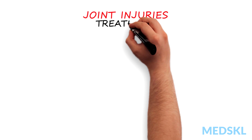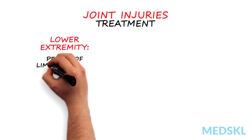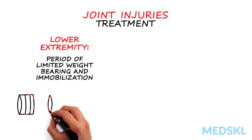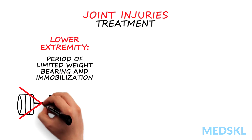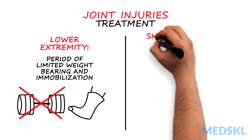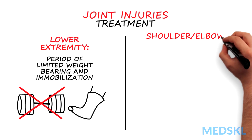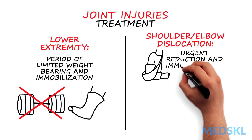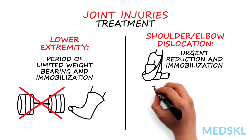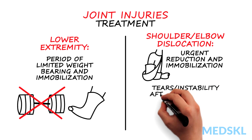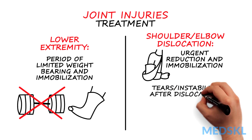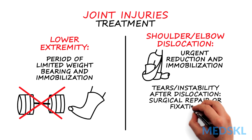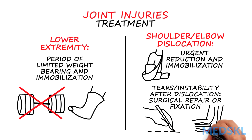Lower extremity joint injuries usually require a period of limited weight bearing and immobilization of the joint. Dislocation of the shoulder or elbow requires urgent reduction and immobilization. Tears in the shoulder joint or instability after an elbow dislocation may require surgical repair or fixation.